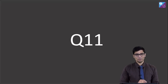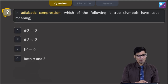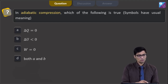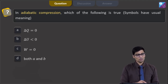This is question number 11. The question says in adiabatic compression, which of the following is true? The symbols have the usual meanings and the options are: delta Q is equal to 0, delta U is less than 0, W is 0, or both A and B.